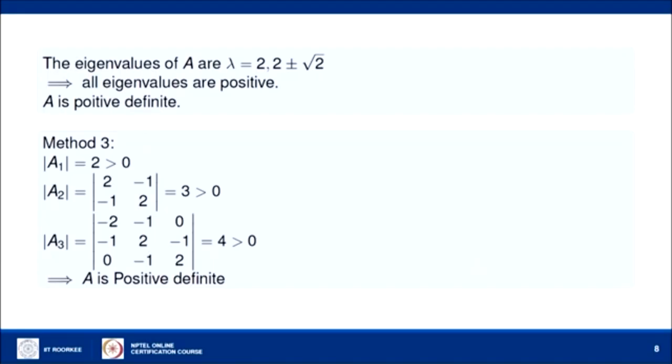In this way I have told you three different methods to check whether a given matrix is positive definite or not. First: take a non-zero vector x and find x transpose A x — if you can write that as a sum of perfect squares, the matrix is positive definite. Second: find the eigenvalues — if all are positive, the matrix is positive definite; if all are non-negative, it is positive semi-definite. Third: the minor test — if all the principal minors are positive, the matrix is positive definite.